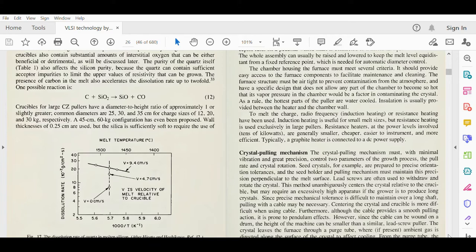The chamber housing the furnace must meet several criteria. It should provide easy access to furnace components to facilitate maintenance and cleaning. The furnace structure must be airtight to prevent contamination from the atmosphere and have a specific design that does not allow any part of the chamber to become so hot that its vapor pressure becomes a factor in contaminating the crystal. In exams, you may be asked to list the crystal growth mechanism techniques. You have to point by point address which material is used for the crucible, why it is important, which material is used for the susceptor, what the temperature should be, what the property of the chamber housing should be, and why auto-rotation is required. All these points are important.